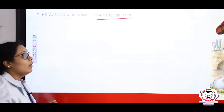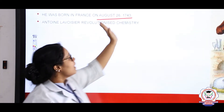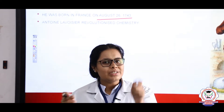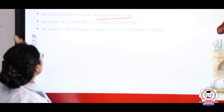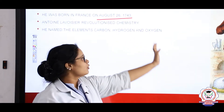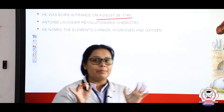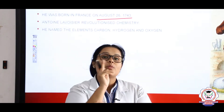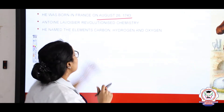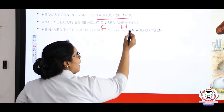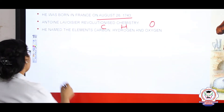Antoine Lavoisier revolutionized chemistry — he showed that chemistry is a major subject applicable in many fields. He also named the elements carbon, hydrogen, and oxygen. These elements already existed, but he was the person who gave them their names and symbols: carbon as C, hydrogen as H, and oxygen as O.